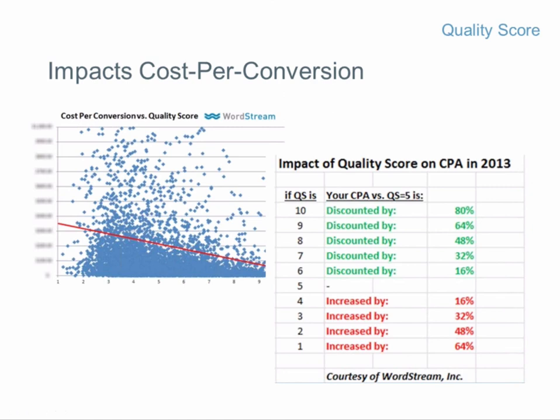Quality score also has a huge impact on cost per conversion. People often say they don't care about cost per click as long as they're converting traffic profitably. But cost per click plays a massive role in determining your cost per conversion. Looking at hundreds of millions of dollars in spend, the higher your quality score, the lower your cost per conversion. On average, we see the cost per action increase or decrease roughly 16% per quality score point.